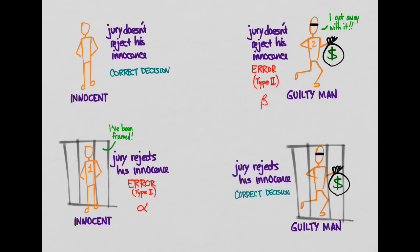Why go through all this with court cases and bank robbers? What does it have to do with hypothesis testing? This analogy helps us understand the decisions and methods used in hypothesis testing. Just as someone is innocent until proven guilty, in hypothesis testing we start with a null hypothesis — the opposite of what we're trying to prove. For example, if we think a drug has an effect, the null hypothesis says it has no effect, and we try to disprove that using evidence from our samples.